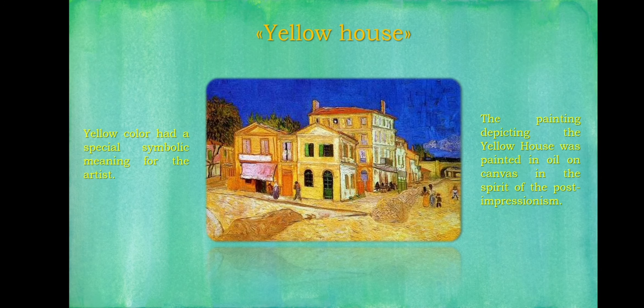The plot of this painting was based on the artist's real home and his old dream of a special creative workshop. The Yellow House became a source of inspiration and a special symbol for the artist. The painting is filled with bright hopes and inspiration.